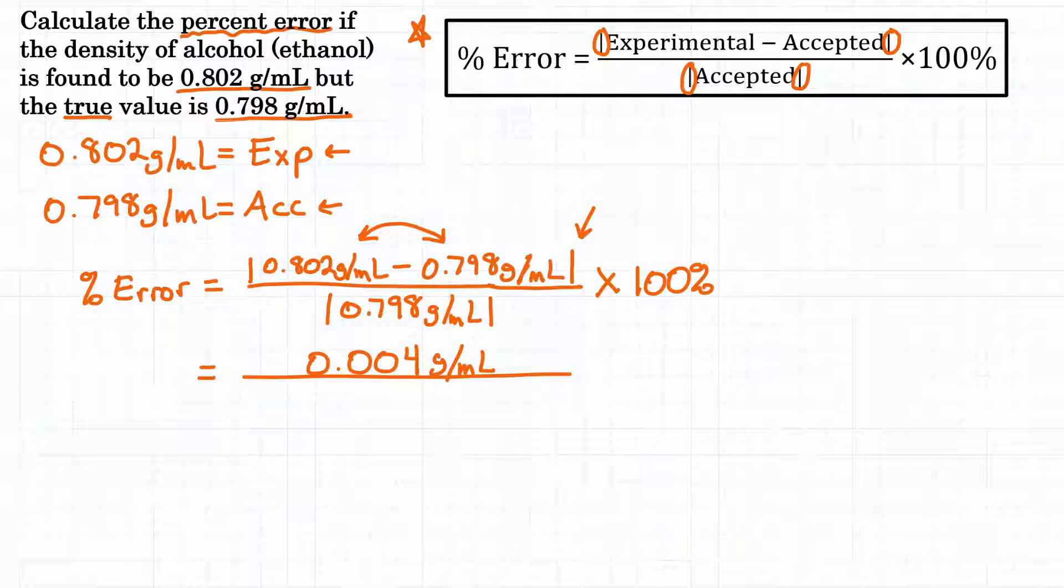And then on the bottom we have the accepted value in absolute value. So we're just going to take our already positive accepted value and write it again. So 0.798 grams per milliliter. And then all that times 100% to turn it into a percentage.